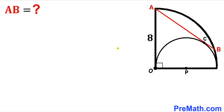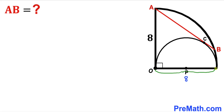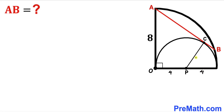Let's get started. We know the radius of this quarter circle is 8 units, so this radius is 8 units as well. Since the radius of this quarter circle equals the diameter of the semicircle, the radius of this semicircle is half of 8, which is 4 units. Likewise, this radius is 4 units as well.